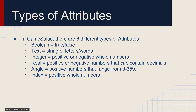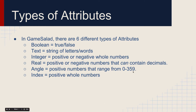Real attributes are positive or negative numbers that can contain decimals. They don't have to contain decimals, but they can. You may want to use a real attribute for a countdown timer or timing how long it takes a player to get through a level. Next we have the angle attribute, which can only be positive numbers ranging from 0 to 359 — since there are 360 degrees in a circle, once it gets to 359 it'll change back to 0. Finally, index attributes are positive whole numbers — they can never be negative and they can never contain decimal points.